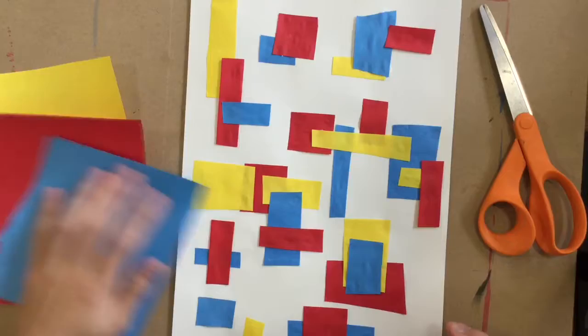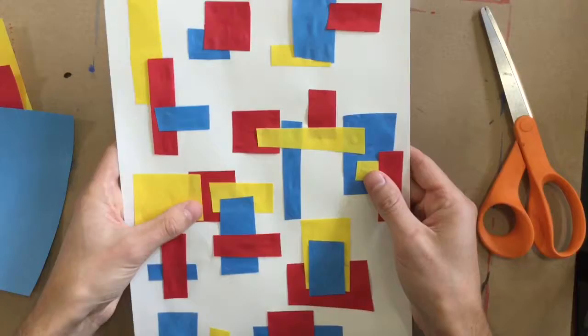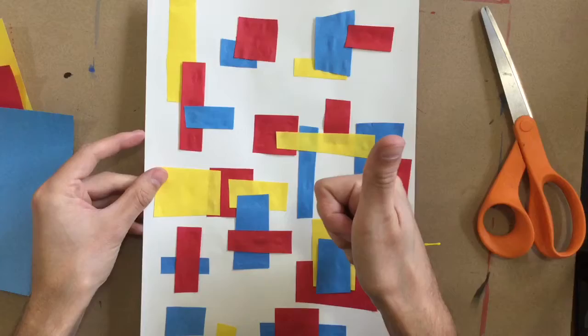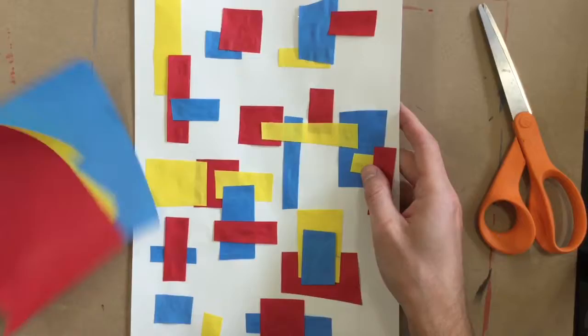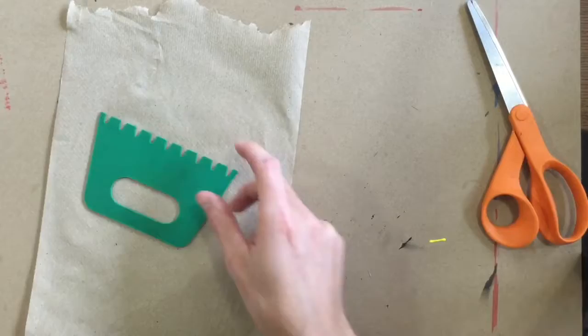After you have your paper full of squares and rectangles using the primary colors, you're going to raise your hand, and if Mr. Calvert gives you the okay, the thumbs up, you are going to pick up that paper and you're going to go to my back counter. At the back counter I have a paper towel with this little plastic thing on it. I also have this tray of paint.